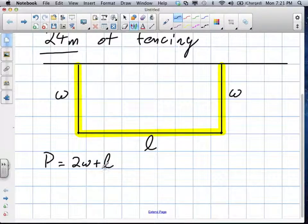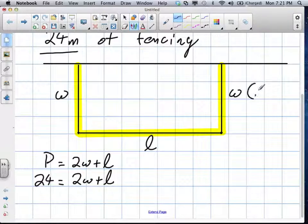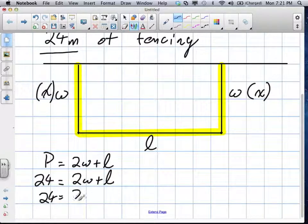So the perimeter is equal to 2w plus l. We have that much information. And in fact, we know the perimeter itself is the number 24. Okay, 24 equals 2w plus l. We're going to call width x. We're going to denote it with that, will be x and that will be x.